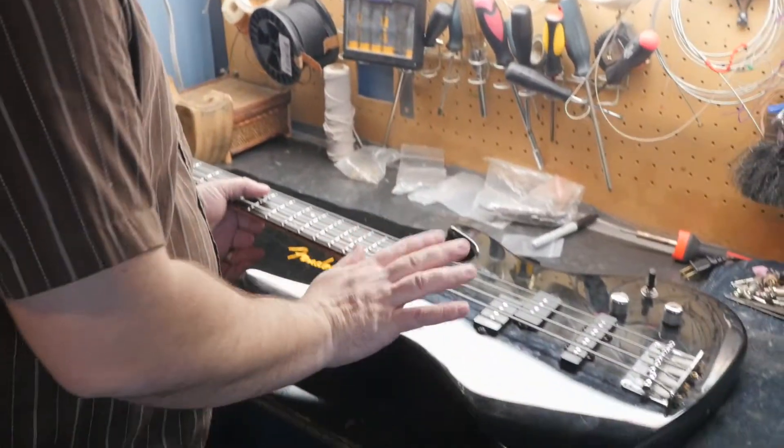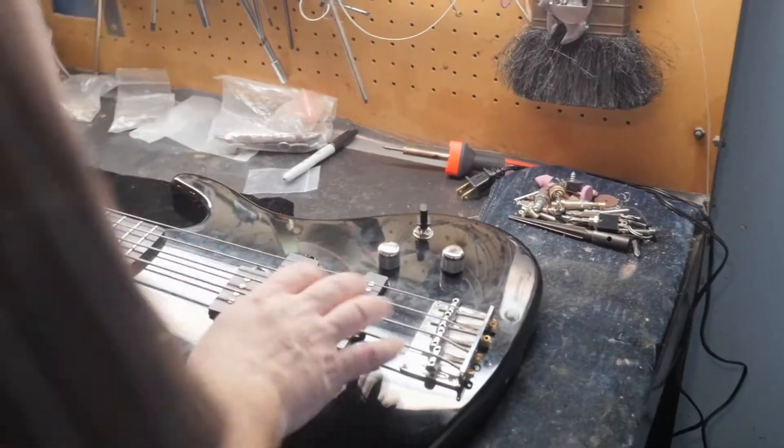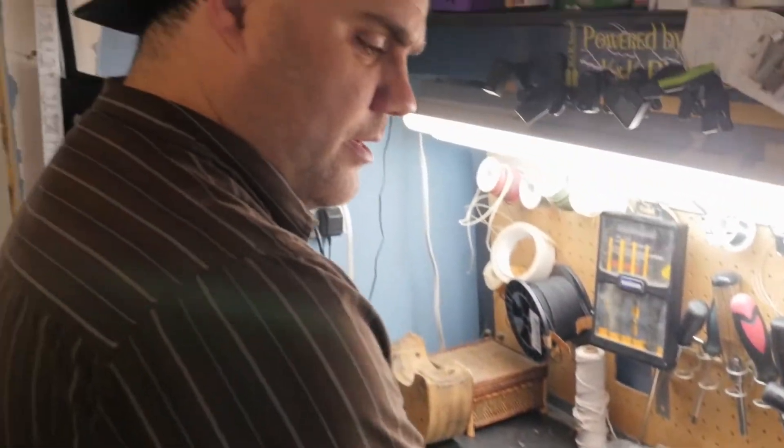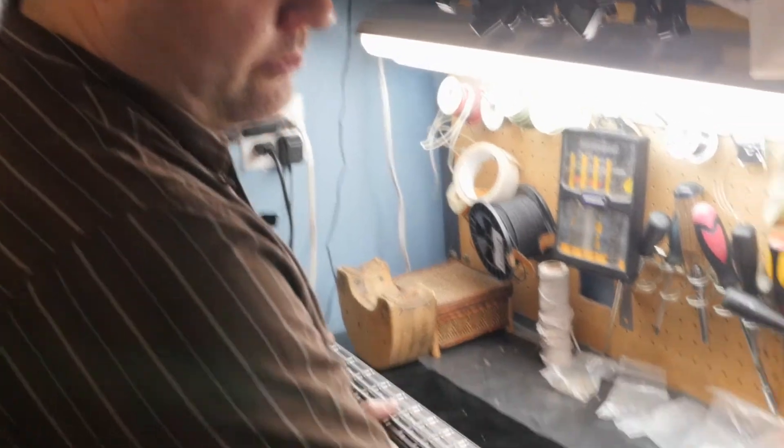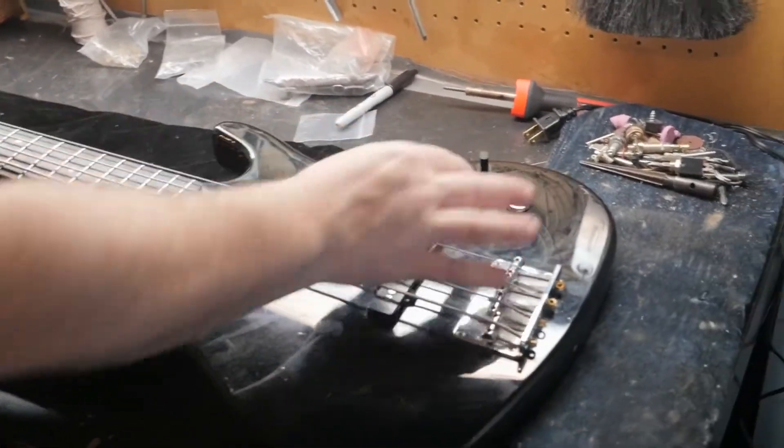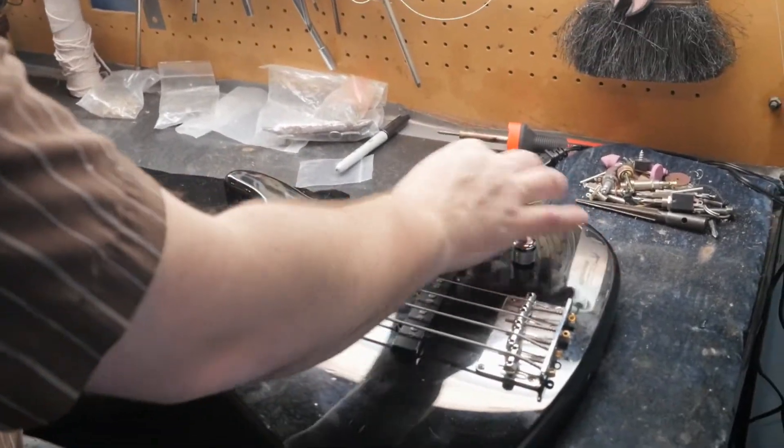First off, we plug this bass in and we have absolutely nothing. No signal, no sound. We put it up on the bench and the first thing I notice is these knobs are loose, which is usually an indication that they've twisted and broken off a wire. I'm going to open it up and see what's going on.